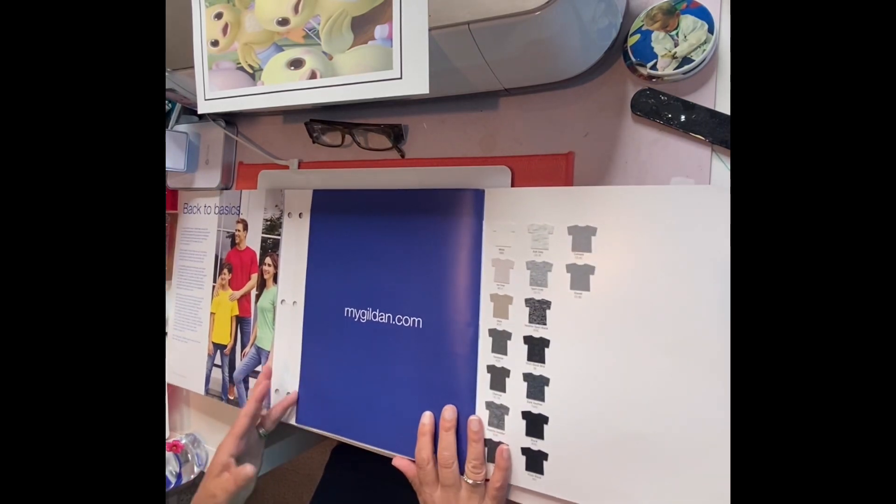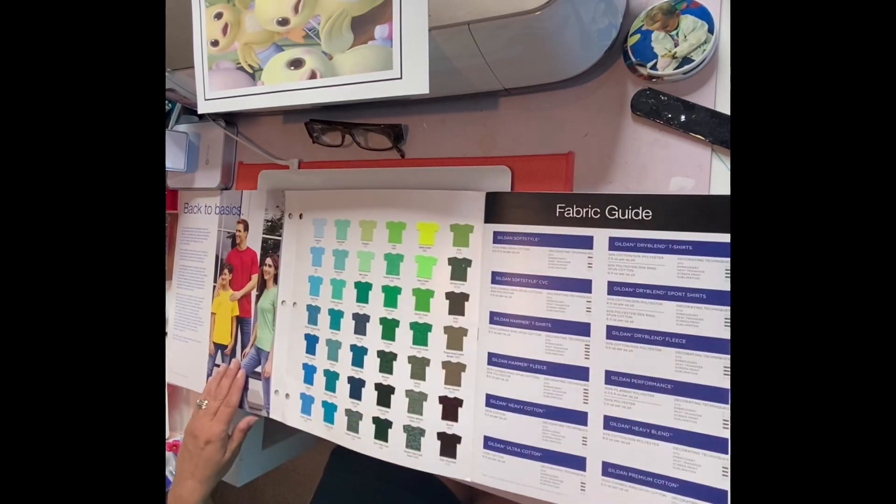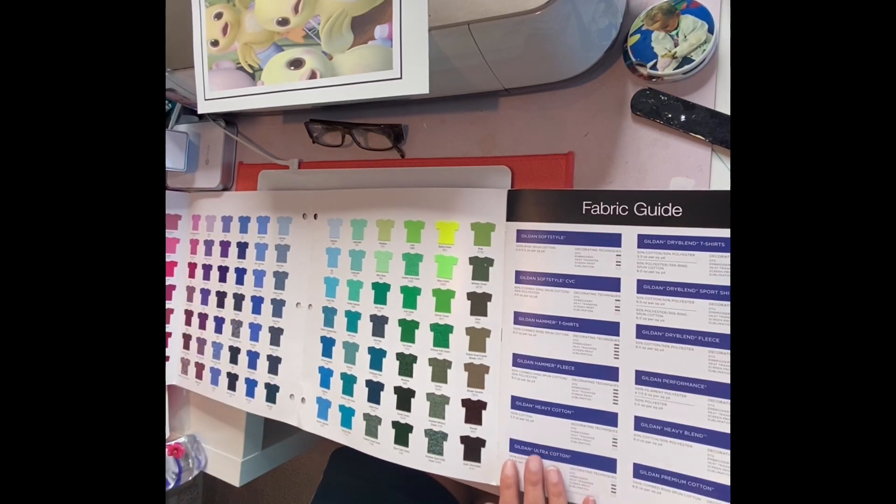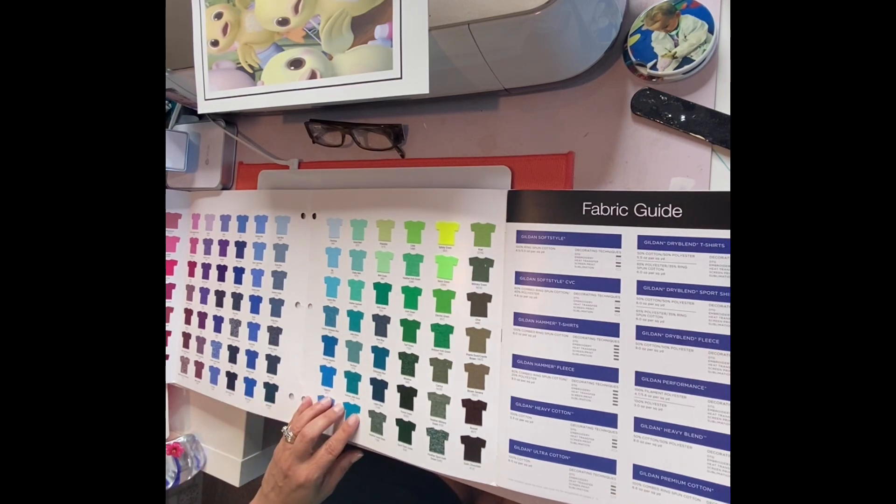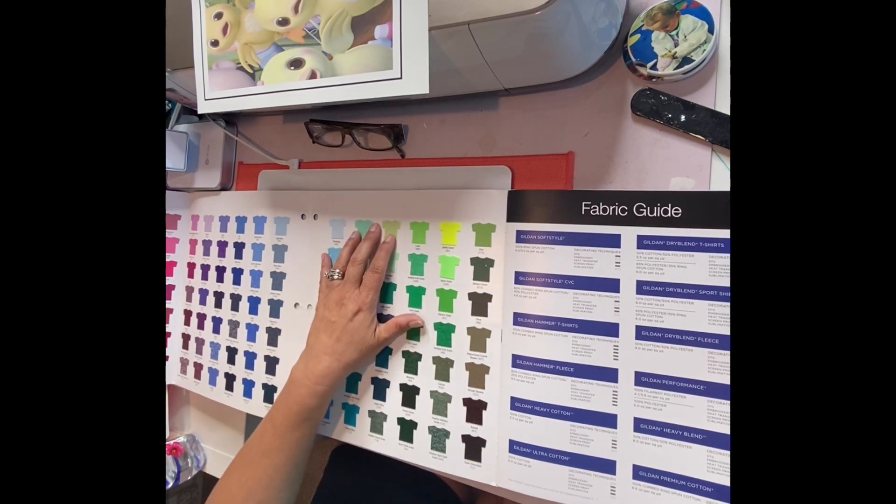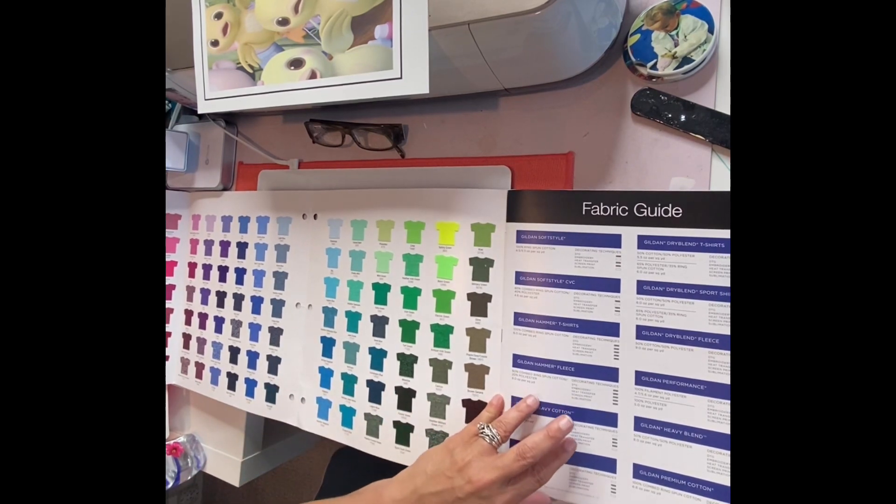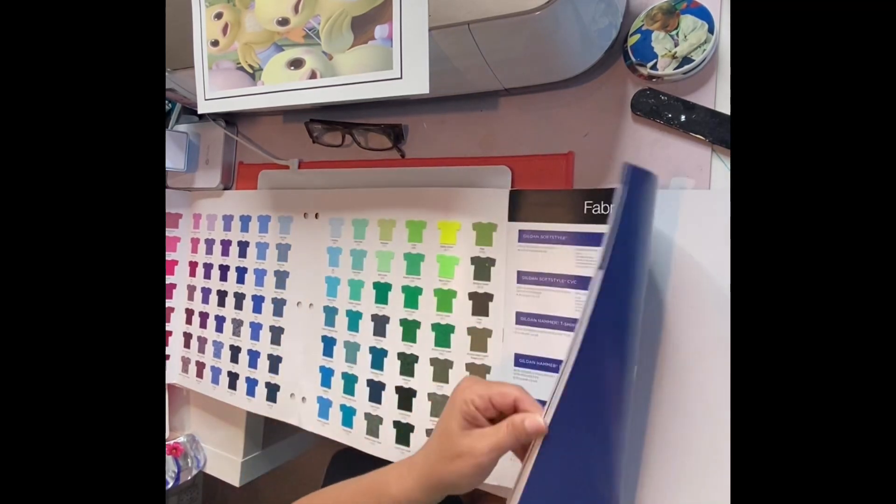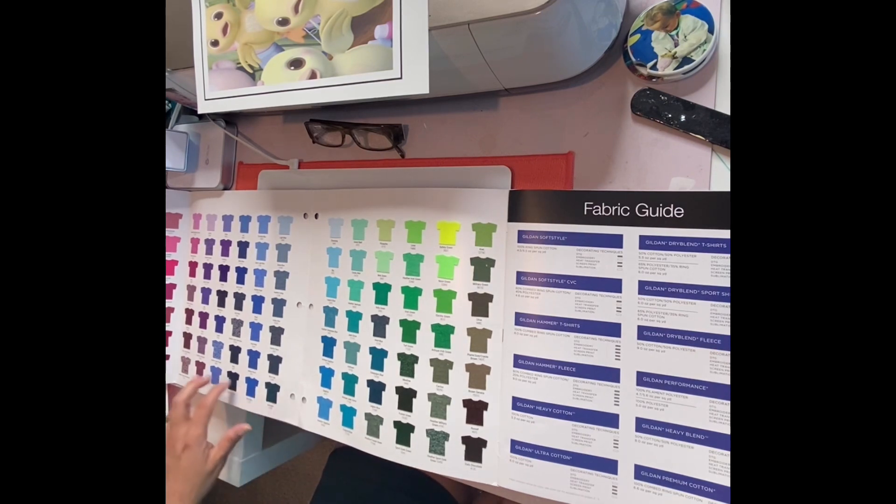One of the things that is really exciting is they have in here a fabric guide. They have color swatches and this is really cool. You can actually see what the color swatches look like. What I will be using this for, if you're someone who likes to do bleaching on your shirts, this will allow you to see what the different colors look like when they're bleached.